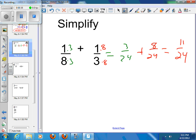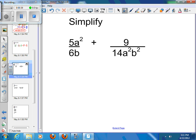So hopefully that's a quick review for you on adding fractions. We can get into our more complex idea of getting a common denominator and just adding. If I've got 6b on this side and 14a²b² on that side, I need to get to a common denominator.